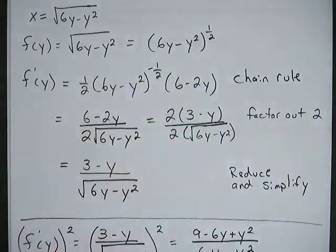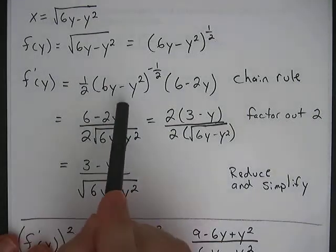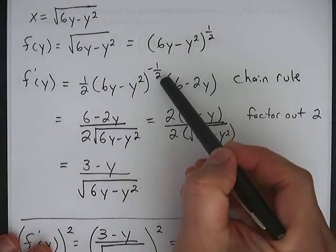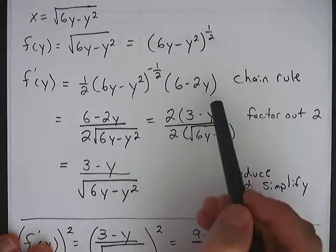I've rewritten it to show the exponent of 1 half to make it easier to use the chain rule. So I brought down the 1 half, took one away from the exponent, makes it negative half, rewrote the inside. The derivative of the inside is here, and then to clean that up,